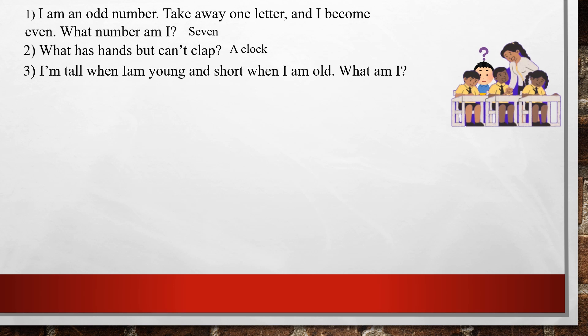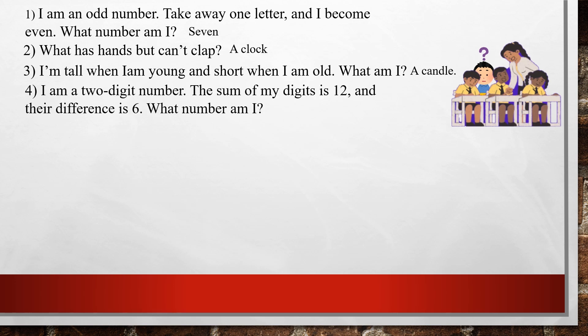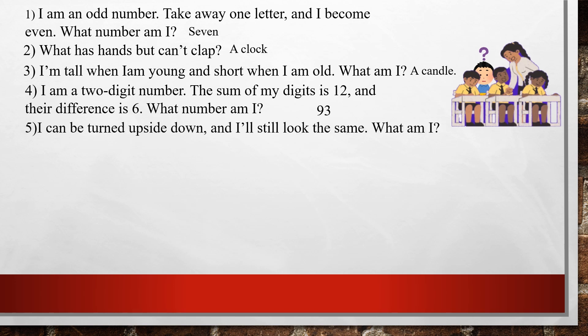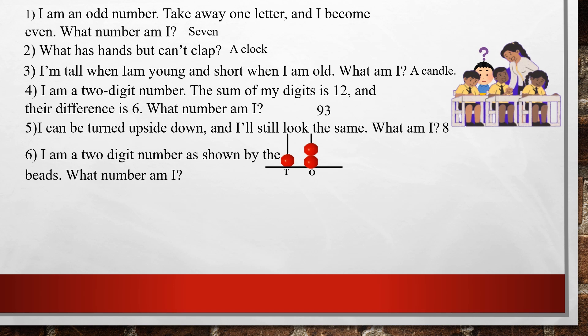I am a two-digit number; the sum of my digits is 12 and their difference is 6. What number am I? 93 — 9 plus 3 is 12 and 9 minus 3 is 6. I can be turned upside down and I will still look the same — what am I? 8. I am a two-digit number as shown by the beads: in the tens place there is one bead and in the ones place there are two beads. The number is 12.